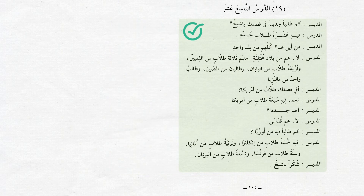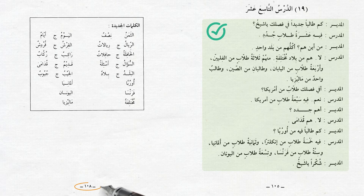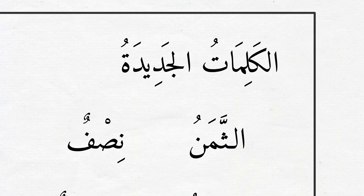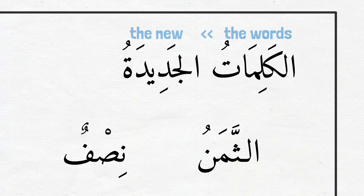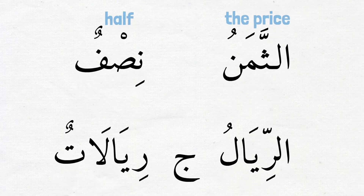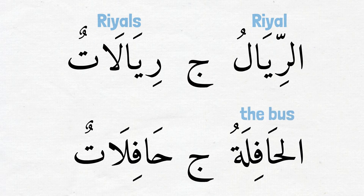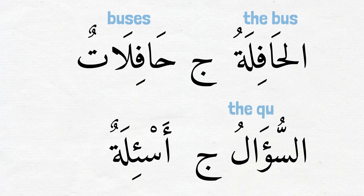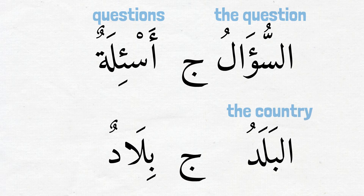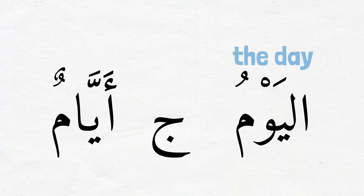That was the end of the dialogue. Now the only thing left to cover in this lesson is the list of new words on page 108. Let's read them together. الكلمات الجديدة — The new words: الثمن — the price; نصف — half; الريال — its plural is ريالات; الحافلة — the bus, plural حافلات; السؤال — the question, plural أسئلة; البلد — the country, plural بلاد; اليوم — the day, plural أيام.